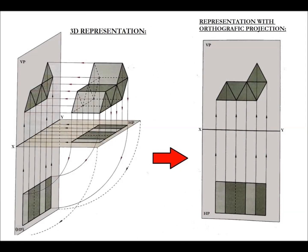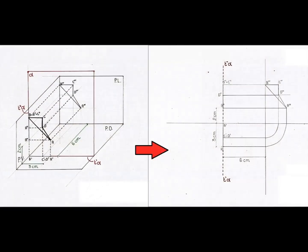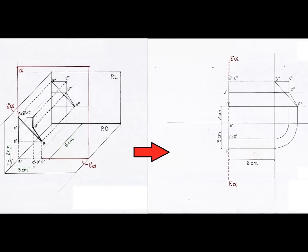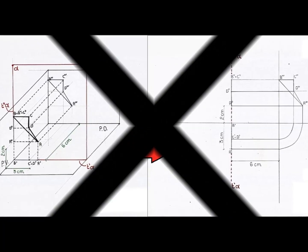The main difficulty with an orthographic projection is that the spatiality and three-dimensionality of the object are completely lost in the drawing, and this makes the drawing difficult both to create and to understand for those who are not used to using this representation technique. Let's look at the basics first.